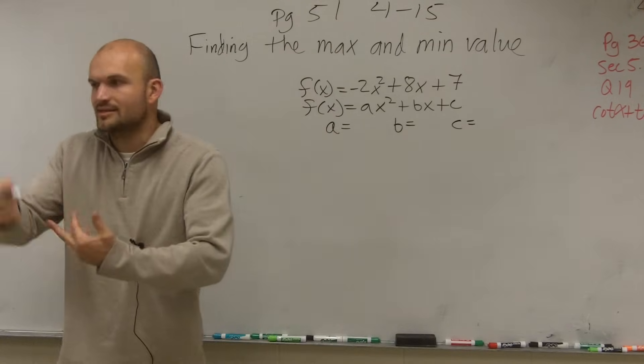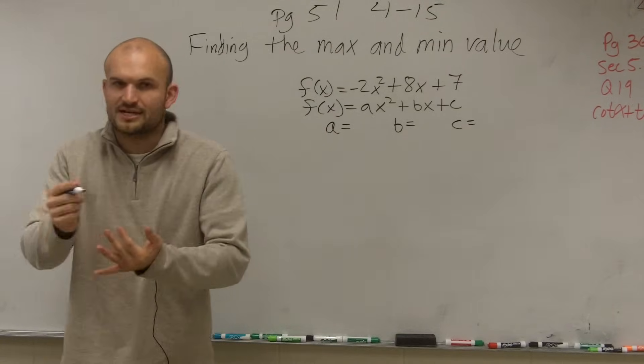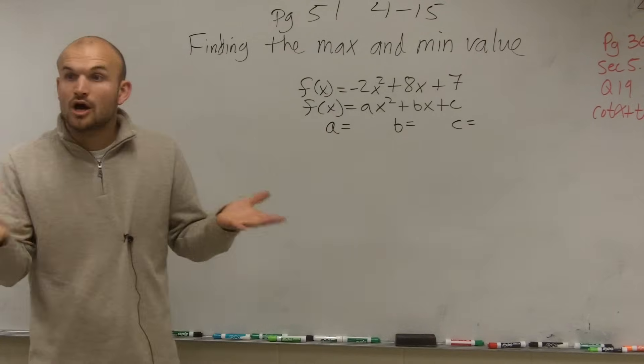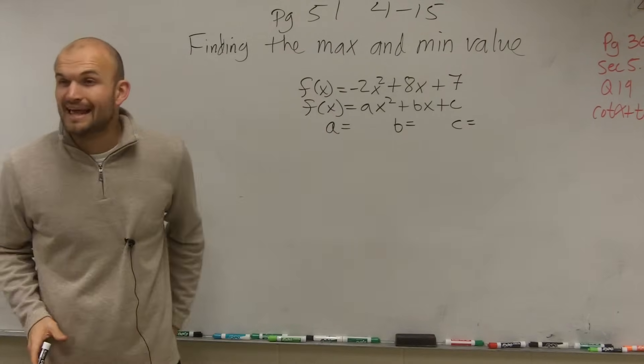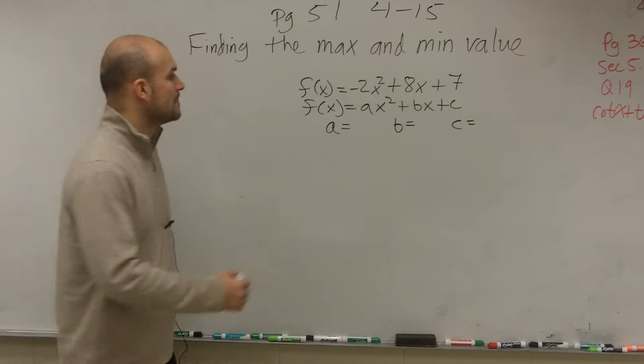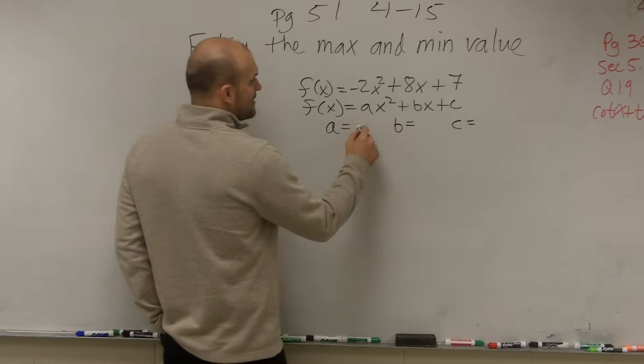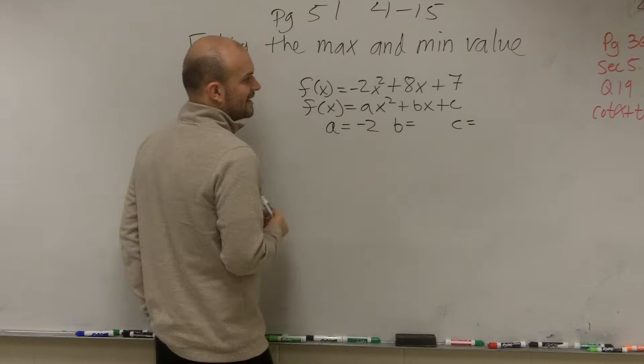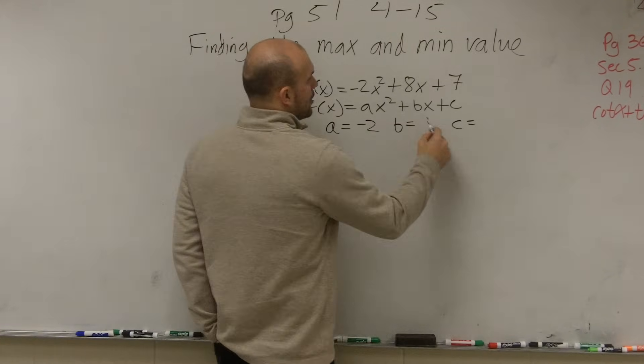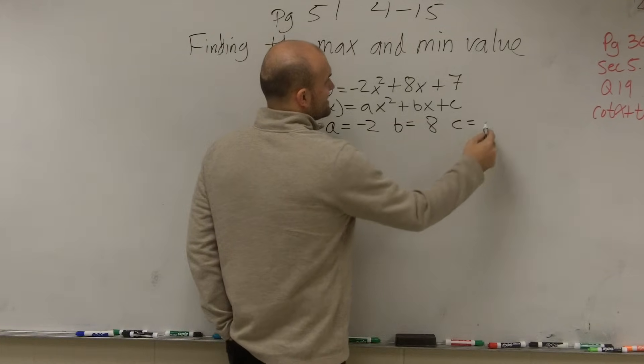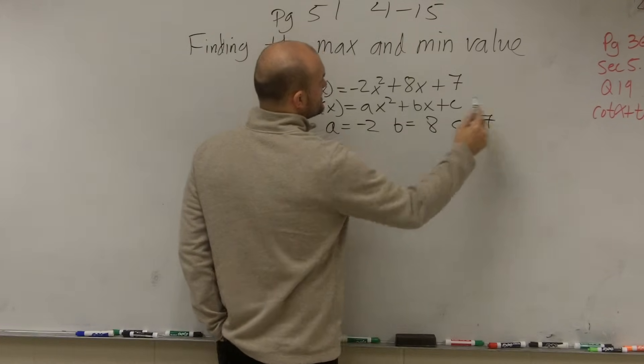We did this for axis of symmetry, for vertex, and all that kind of stuff. We want to determine what a, b, and c are. So our a, in this case, is negative 2, our b is 8, and our c is 7.